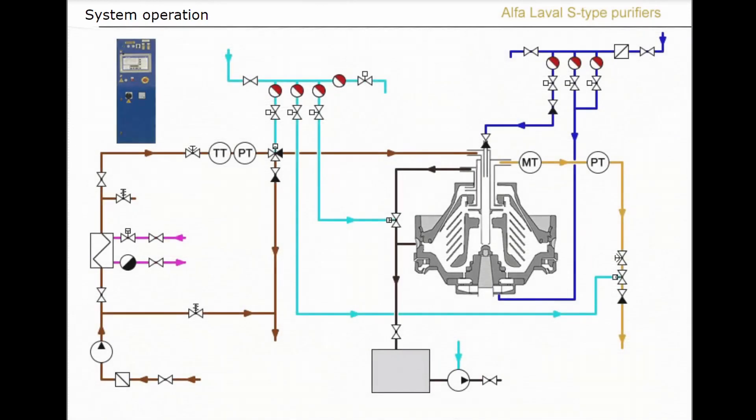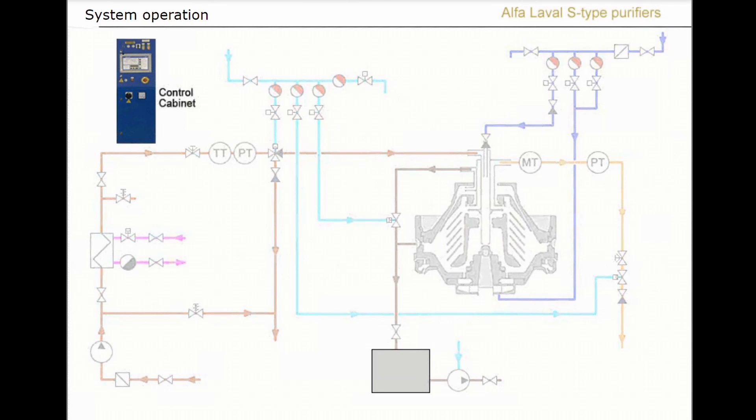System operation is supervised by a control unit in the control cabinet. The control unit adjusts the parameters of the separating process.